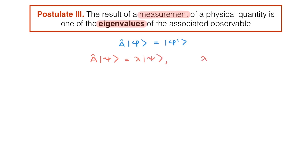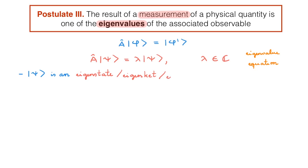Lambda is the scaling constant and in general it is a complex number. I can't emphasize enough how important the states psi and scalars lambda are in quantum mechanics. The equation here is called the eigenvalue equation of the operator A. We call psi the eigenstate, or eigenket, or eigenvector of the operator A. These terms mean exactly the same in quantum mechanics. And we call lambda the eigenvalue of A.